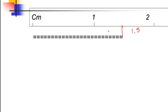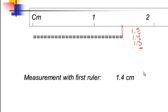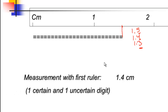Looking at the ruler, the end of the line appears to be almost in the middle between 1 and 2. If you think it's exactly in the middle you might go with 1.5; if it's closer to 1 you might go with 1.4 or 1.3. All those are possible answers — the digit furthest to the right is uncertain. One possible answer is 1.4, which has one certain digit (the 1) and one uncertain digit (the 4), written as 1.4 ± 0.1.